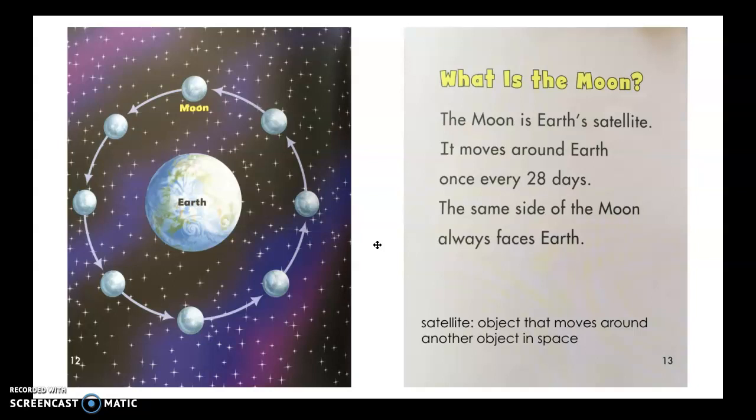What is the moon? The moon is earth's satellite. It moves around earth once every 28 days. The same side of the moon always faces earth.